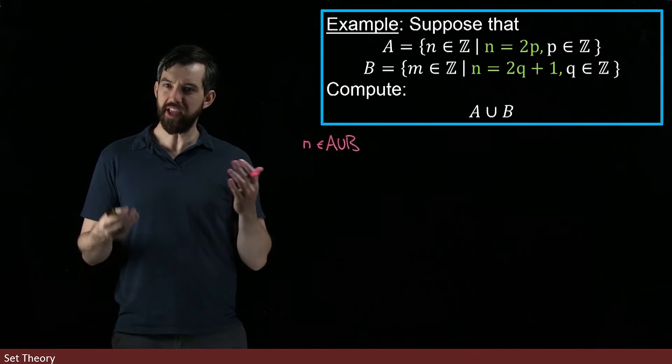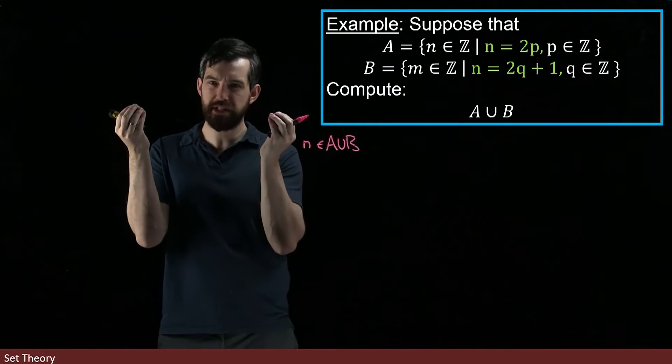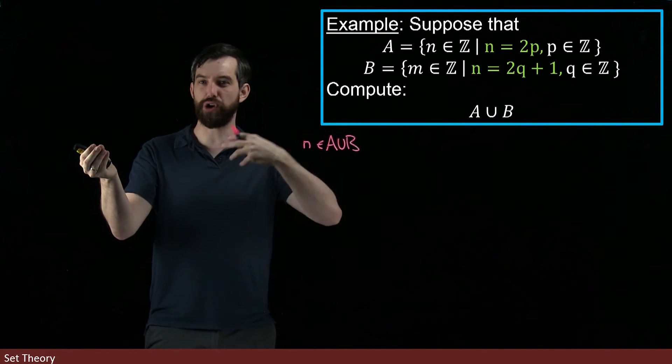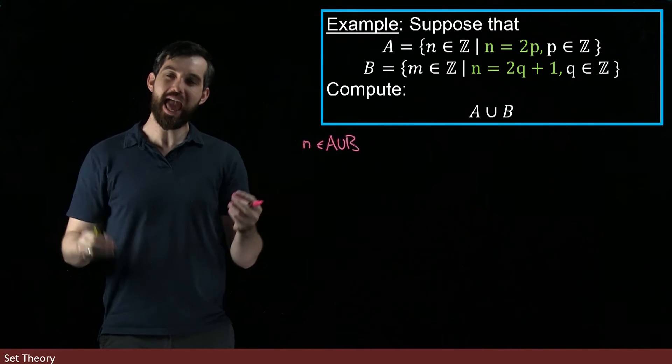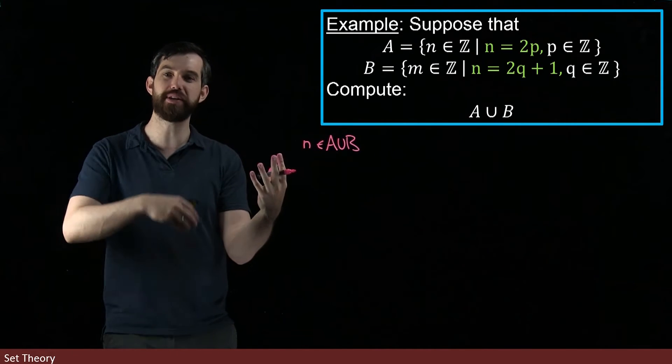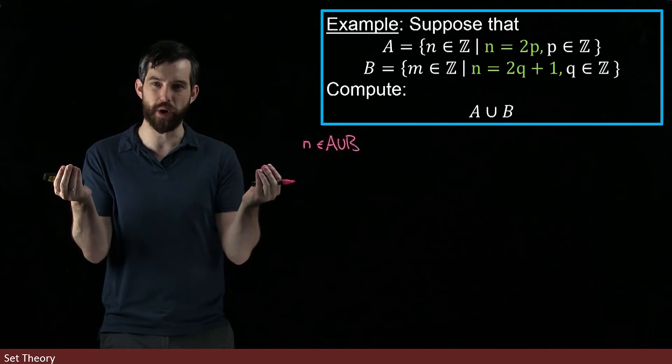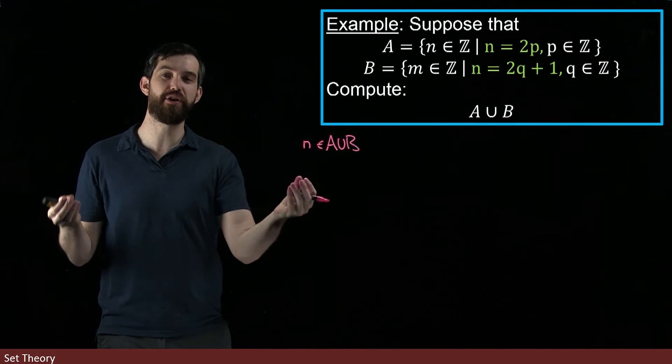If you think about what equality of sets means, it's actually two different claims tied together. I want to show that A ∪ B is included in the integers, and I want to show that the integers are a subset of A ∪ B. That's what it means to make them equal—to say that anything in the one is in the other and anything in the other is in the one.